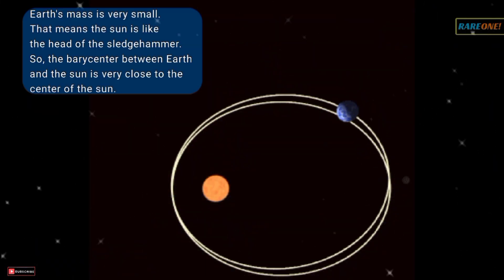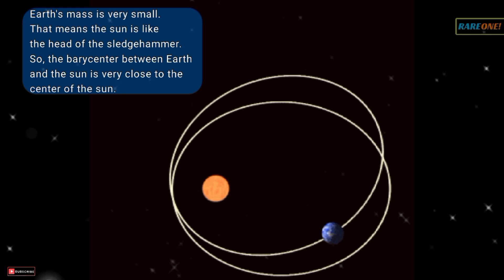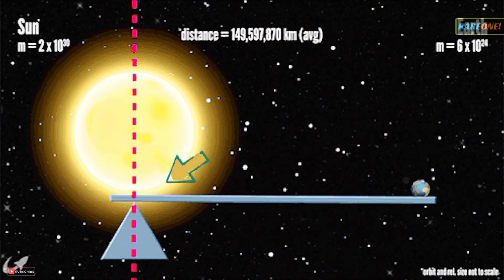Now, what about Earth? Well, compared to the Sun, Earth's mass is tiny. So, the barycenter between Earth and the Sun is pretty much within the Sun itself.